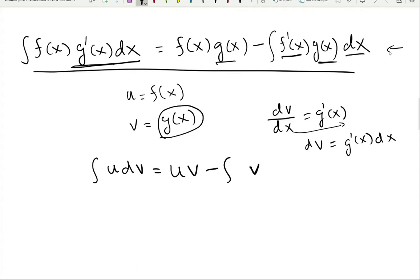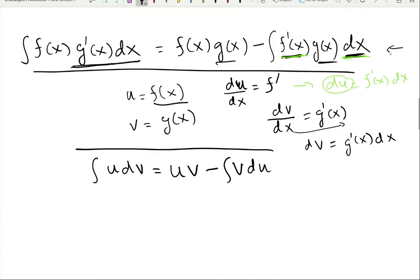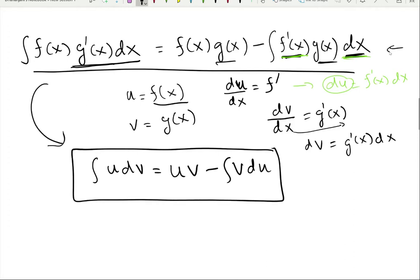Now f-prime·dx: f-prime is the derivative of f with respect to x, so du/dx gives f-prime. Therefore f-prime·dx becomes du. So the integral of v·du replaces that term. This is how we get from the f and g-prime formula to the u and v version.